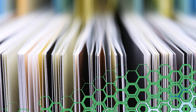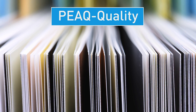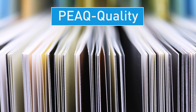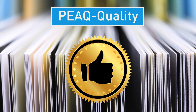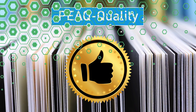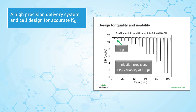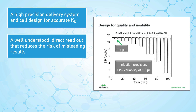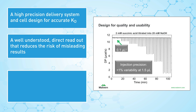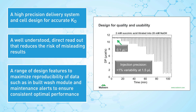The second benefit of this system is peak quality, which has features that will increase your productivity and the quality of publications. They include a high-precision delivery system and cell design for accurate KD, a well-understood direct readout that reduces the risk of misleading results, and a range of design features to maximize reproducibility of data, such as an in-built wash module and maintenance alerts.